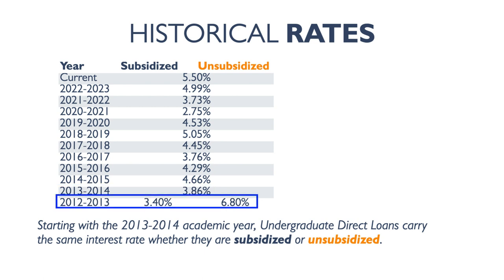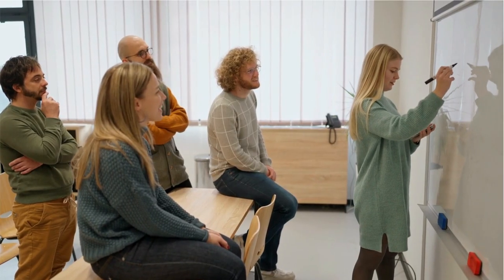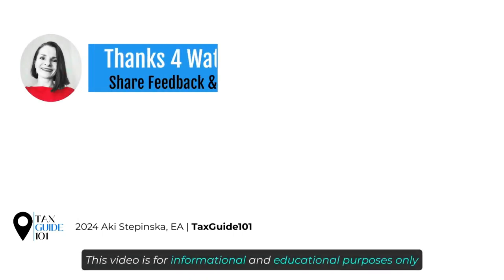Prior to that, there were different interest rates for subsidized and unsubsidized loans for undergraduate students. Currently, there is still a different interest rate for unsubsidized loans for graduate students.